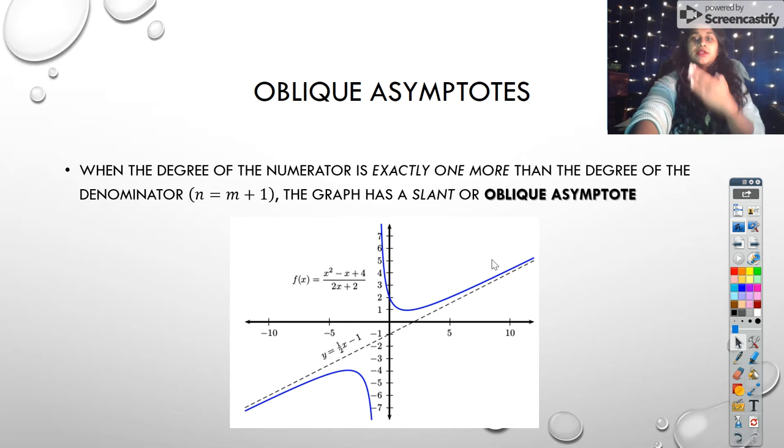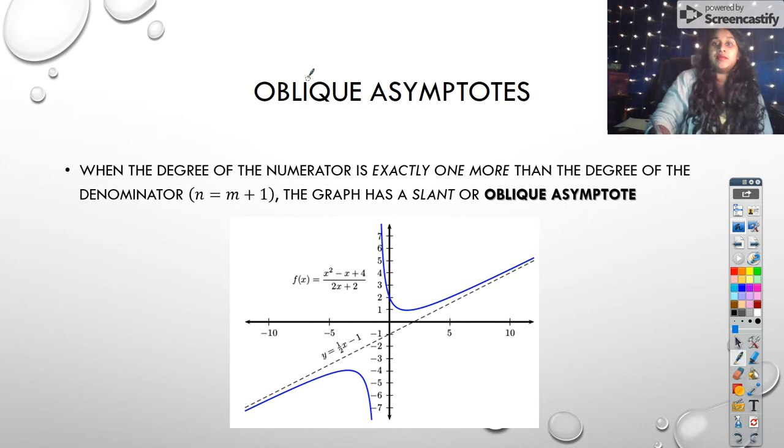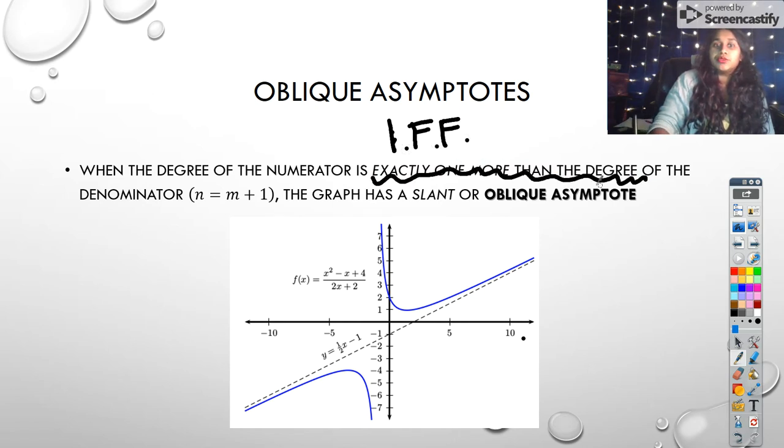So an oblique asymptote is literally a slanted asymptote. And this happens when, and if and only if, so this is an IFF statement, right? If and only if it has exactly one more degree of the denominator. So that means, sorry, I believe meant to say the numerator, the degree of the numerator is exactly one more. So in this instance, in this example, it's x squared over x.